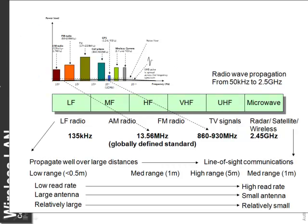Within the radio spectrum itself, it splits up into several key areas: low frequency, medium frequency, high frequency, very high frequency, ultra-high frequency — which covers TV signals — and then on into microwaves. The antennae become smaller as we move from low frequency up to microwave, so the smallest antennas are for microwave and the largest antennas are for low frequency.